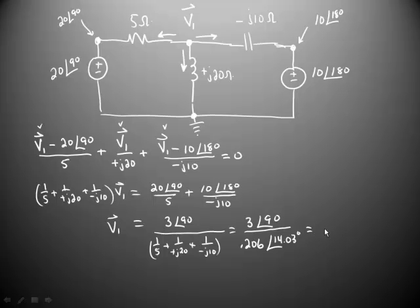And if you do the arithmetic on that one more time, it should be fairly easy because you can just divide the magnitudes and subtract the angles. We should end up with 14.55 volts at angle 75.96 degrees.